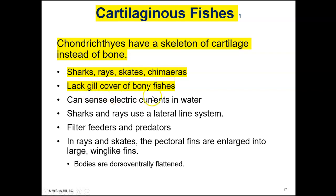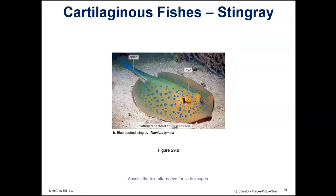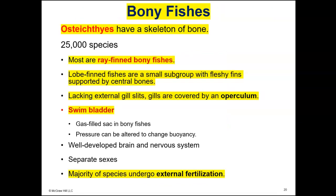The cartilaginous fishes lack a gill cover, so you can just see their gills — they don't have a covering over their gills. This is a tiger shark, and this is a stingray.